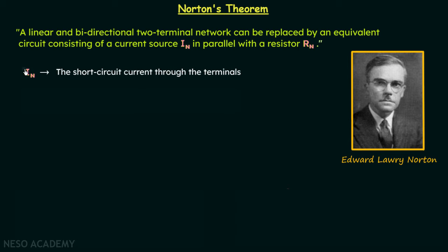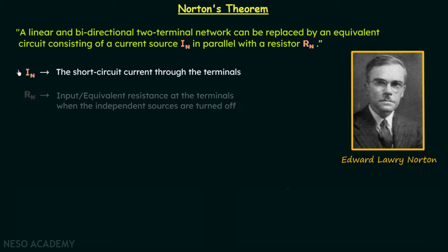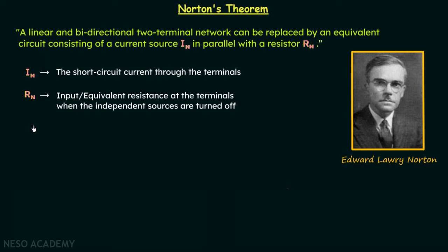This will be more clear after taking one example problem. Moving on to Rn: it is the input or equivalent resistance at the terminals when the independent sources are turned off. When you compare this with Rth, you will find they are absolutely equal. So there is no difference between Rn and Rth — we can say that Rn is equal to Rth.